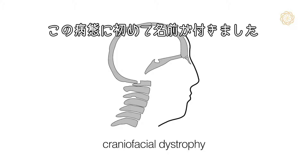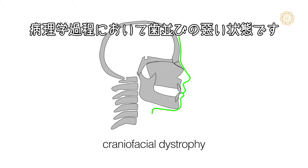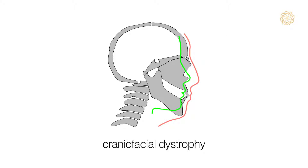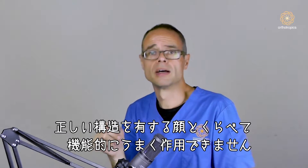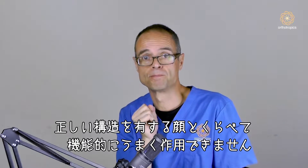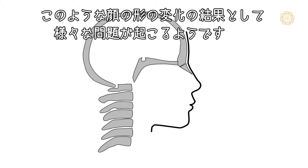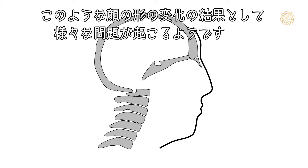This is the first time someone has tried to put a name to the pathological process underlying crooked teeth. It seems that a face that is not the right shape isn't going to work as effectively as if it had the correct architecture, and there are a number of different problems that seem to be occurring as a result of this change in facial form.